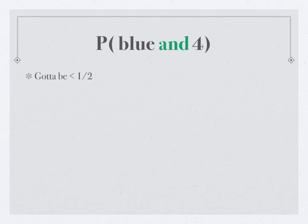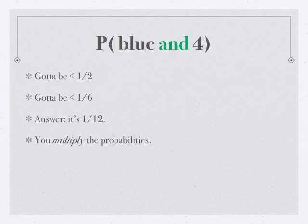The next one is a little more subtle. It's got to be less than a sixth. That's because if it's going to turn out to be a four, that probability is one-sixth. But since it could be blue or red, it's got to be less than that. Turns out the answer is one-twelfth, which is just what you might expect. You multiply the probabilities.